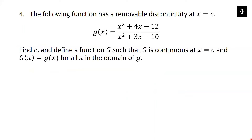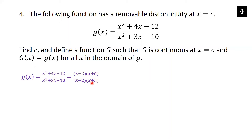The function g(x) = (x² + 4x − 12) / (x² + 3x − 10) has a removable discontinuity at x = c. Factor the numerator as (x − 2)(x + 6) and the denominator as (x − 2)(x + 5). The (x − 2) factors cancel, so g(x) = (x + 6)/(x + 5) for x ≠ 2.